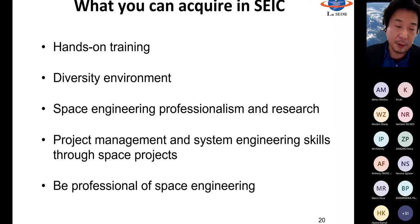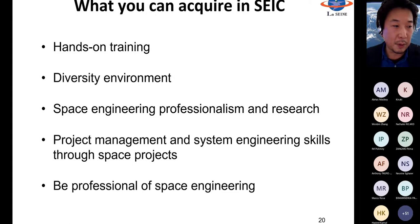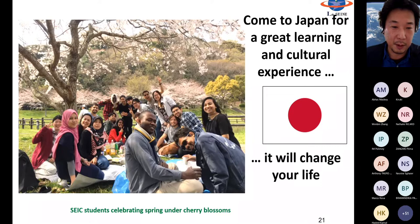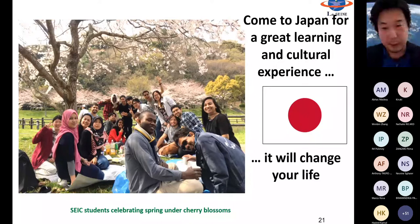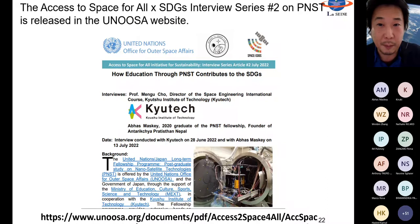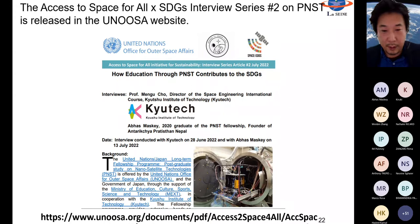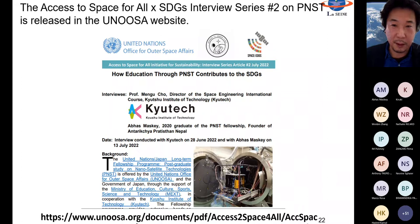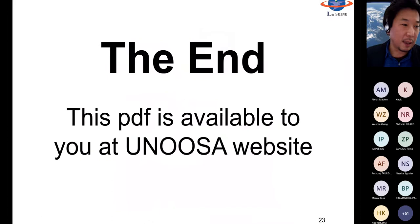This is a summary of the Space Engineering International course. Through this two or three years of experience, you can become a professional in space engineering. Also, Japanese culture is very original and not similar to other countries — you can have a very good experience in Japanese culture in a diverse environment. One more item: on the UNOOSA webpage there is a 'Space for All' interview series, and interview number two features our center director Professor Cho. One of today's presenters is also featured on this website. Please check it after the webinar. That's all for my presentation. Thank you.